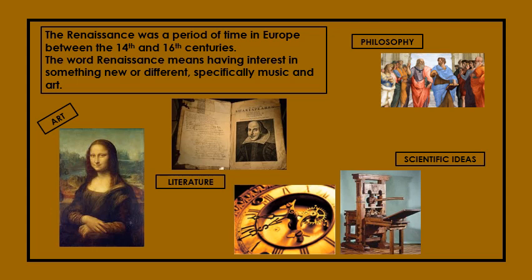We have paintings such as the Mona Lisa that was painted during this era. Shakespeare was around during this time, and his poetry, sonnets, and all of his literature became a very significant part of the Renaissance. We also learn about scientific ideas — how people were able to manufacture the first mechanical clock, as well as the printing press.